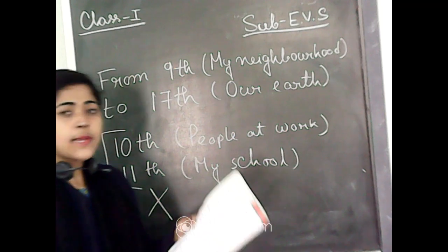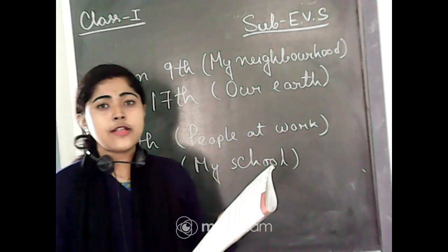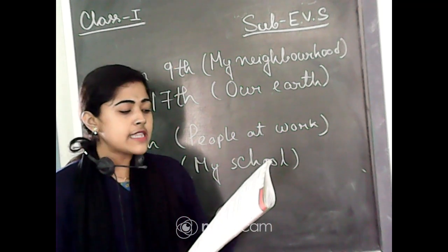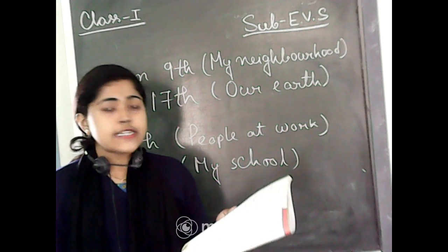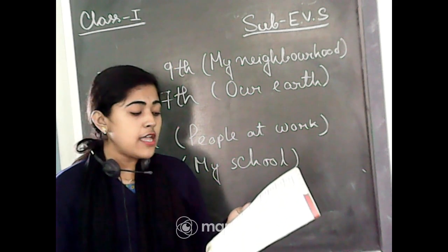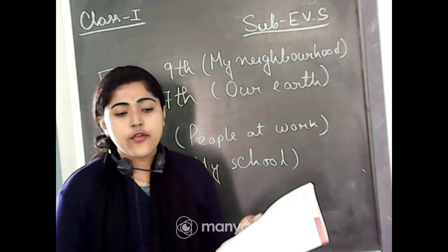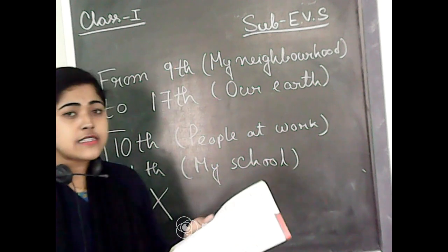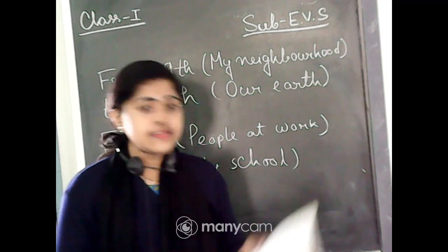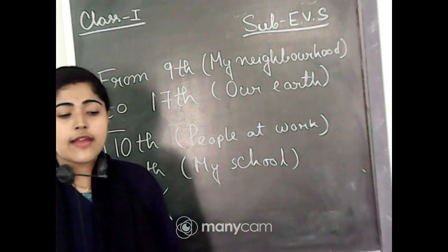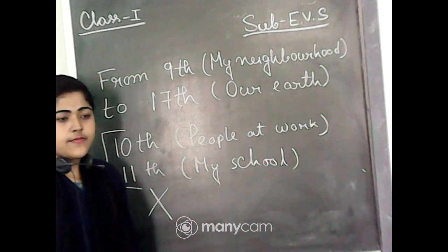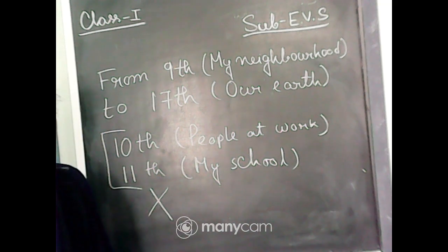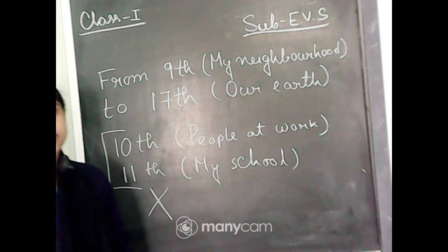So the chapters for Term 2 are: 9th — My Neighborhood, 12th — Let's Celebrate, 13th — World of Plants, 14th — World of Animals, 15th — Means of Transport, 16th — In the Sky, and 17th — Our Earth. Those will be held in your Term 2.